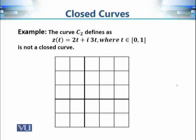Now let's consider another example: z(t) = 2t + i·3t, where t varies from 0 to 1. At t = 0 the value is 0, giving the origin. At t = 1 the output is 2 + 3i. So those are our initial and terminal points.